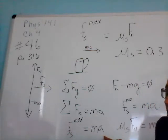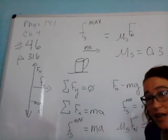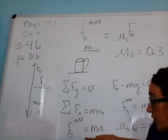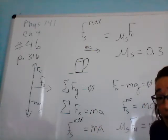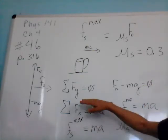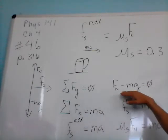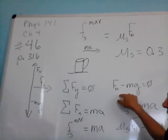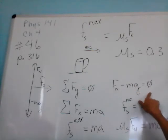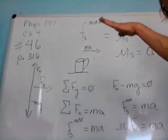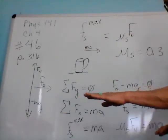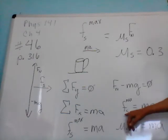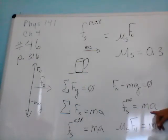Here is our Newton's second law equation in the x direction. Sum of all the forces, there's just one, that static frictional force, is equal to ma. The sum of our forces in the y direction is normal force upward and gravity downward. The sum of those forces is zero because our coffee cup is neither rising or falling. In the x direction, we have our maximum static frictional force is equal to ma.